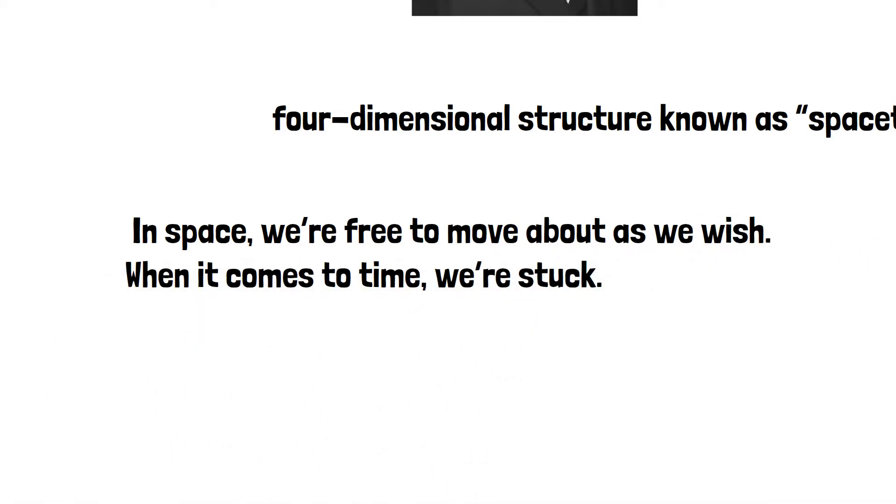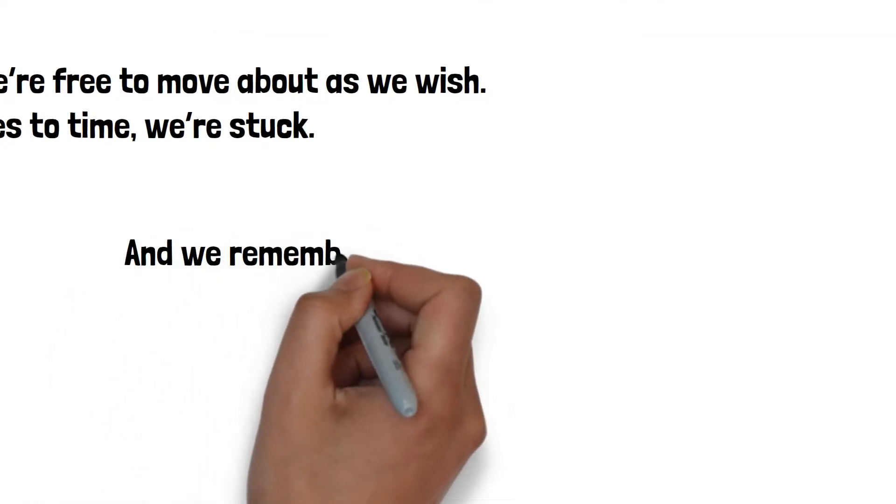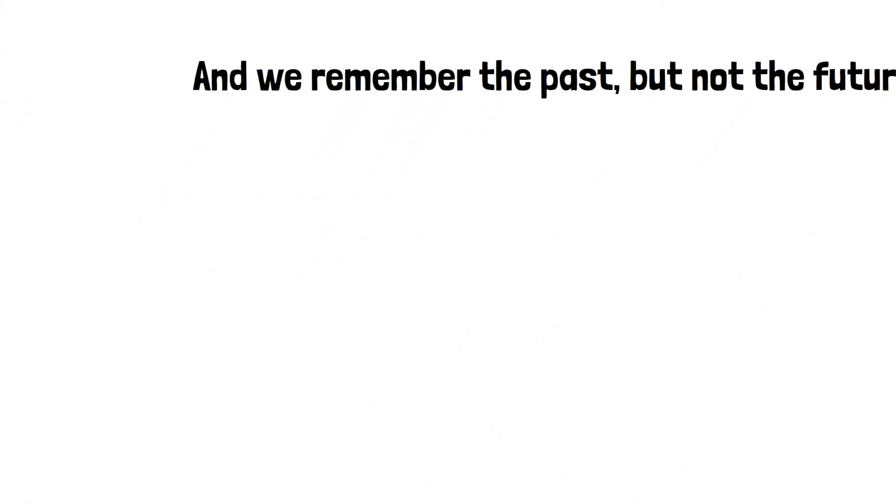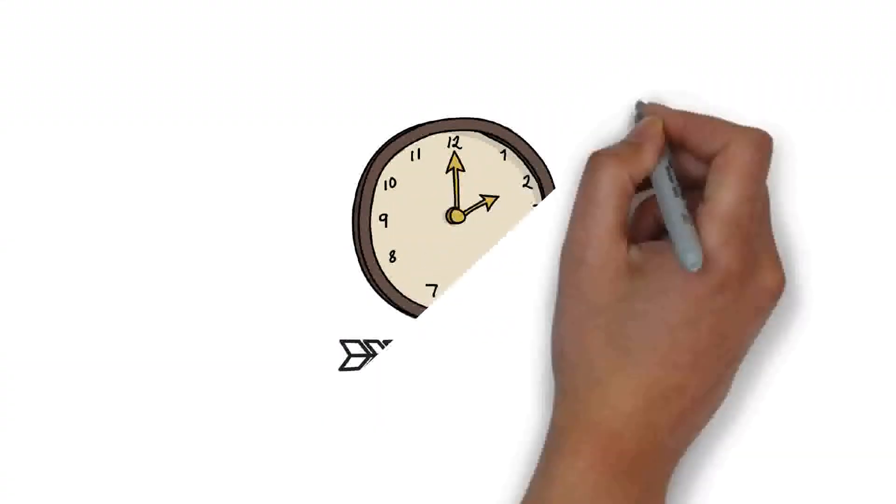We grow older, not younger. And we remember the past, but not the future. Time, unlike space, seems to have a preferred direction. Physicists call it the arrow of time.